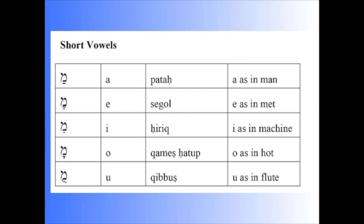The vowels are usually divided into short vowels, long or lengthened vowels, and then the true long vowels, which are written with the Matris Lectionis. And then there's a set of what we call reduced vowels. The short vowels include five different vowels, representing A-E-I-O-U sounds.